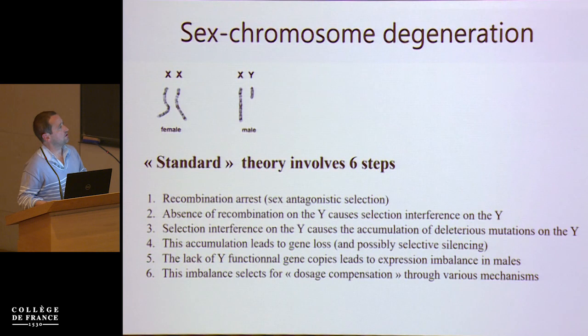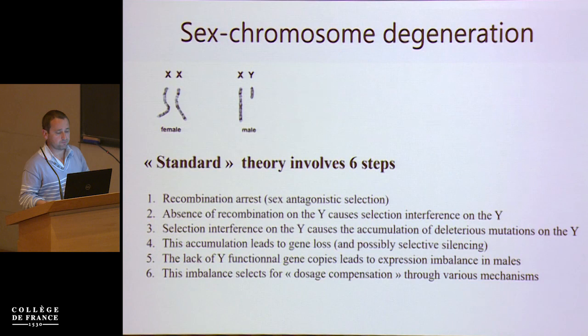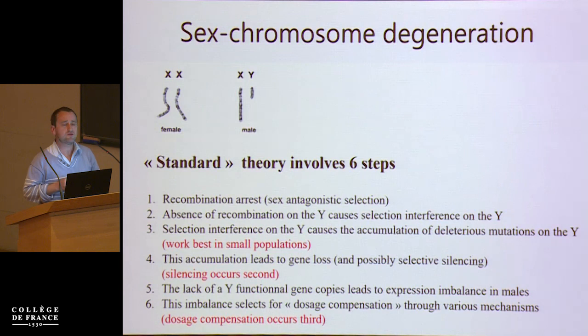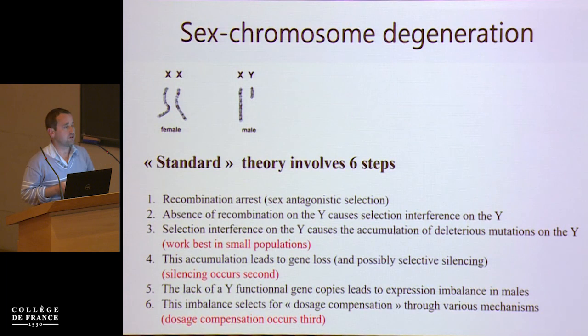That's the usual story, and it has been around for decades, receiving a lot of indirect confirmation of different sorts. An important specific feature of this theory is that because it's caused by selective interference, it works really better with smaller population sizes. I would just like to point out that silencing occurs second in most models that have been produced, and dosage compensation occurs third in that causal framework.